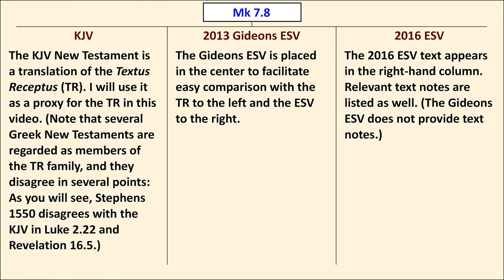Here's an example of the format you'll see over and over again in this video. At the top you'll see the passage. On the left will be the King James Version quotation from the New Testament. In the center, to ease comparison, is the Gideon's ESV. I'll highlight the portion of the passage that's of interest in blue or red. On the right-hand side of the chart will be the 2016 English Standard Version.